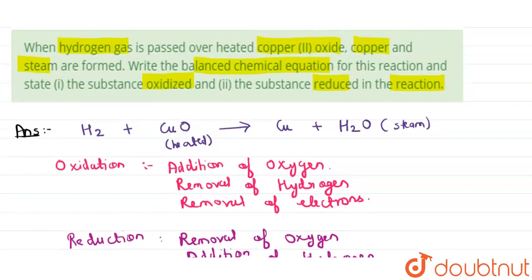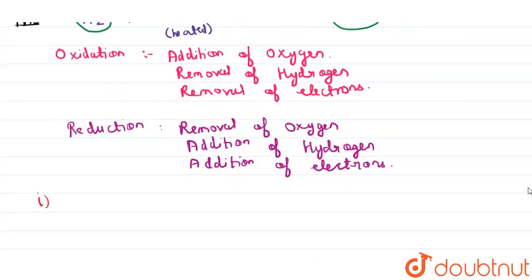...we have asked substance oxidized and substance reduced. So if we consider hydrogen H2, that it is converted into water, it implies that oxygen has been added to hydrogen gas. So we can infer that hydrogen is oxidized—hydrogen gas is oxidized because H2 is getting converted into H2O.